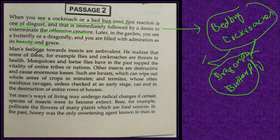Man's feeling toward insects is ambivalent. He realizes that some of them — for example flies and cockroaches — are a threat to health. Whenever you see cockroaches, man has an ambivalent nature and is quite confused and baffled about what to think. He is ambivalent about insects: what to like and what not to like, because human beings like certain insects and dislike others. Mosquitoes and the tsetse fly are among those disliked.